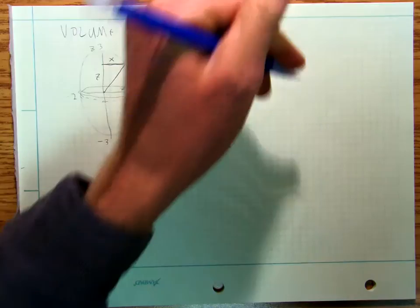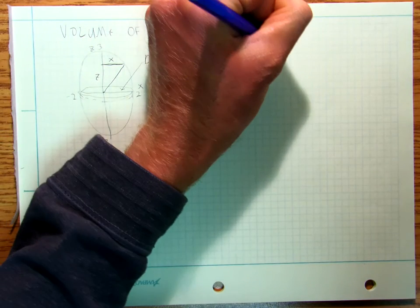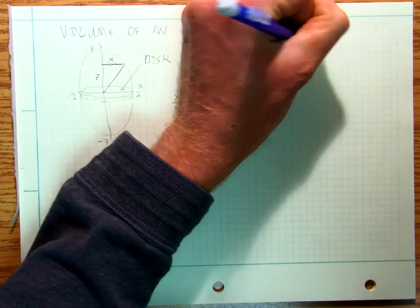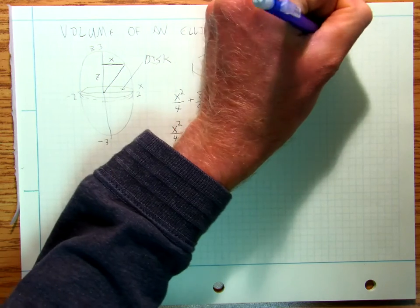And so the area of a disk, my dA is going to be pi x squared dz.